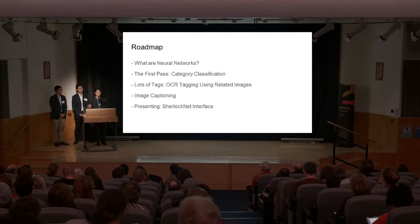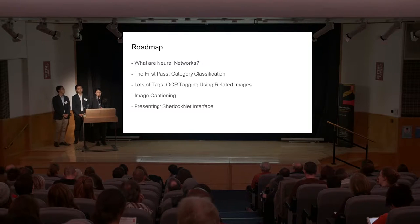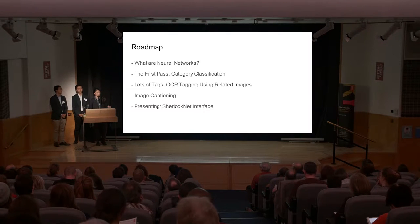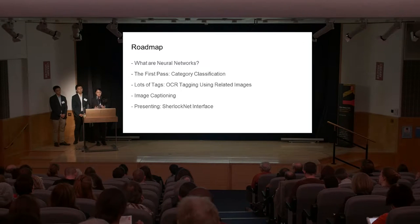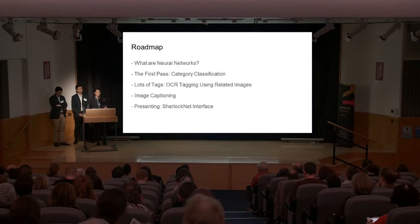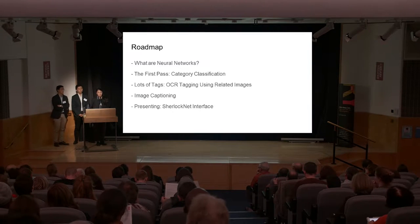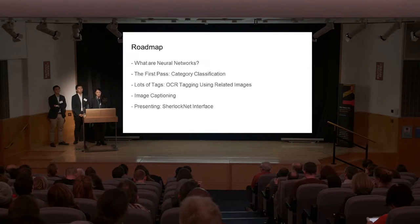Today we're going to talk briefly about what neural networks are, then we're going to talk about our first pass at the dataset, categorizing every single image into one of 12 categories. Then we're going to talk about how we used OCR data to generate lots of other tags besides categories. We'll talk about image captioning and finally we'll present our web interface for accessing all of this data.